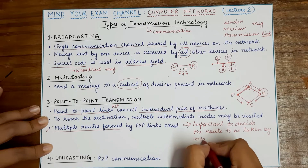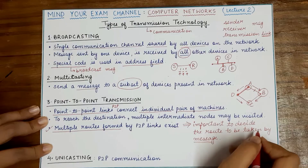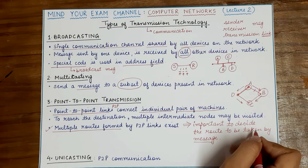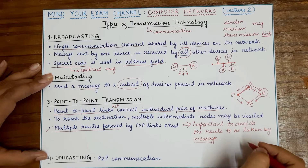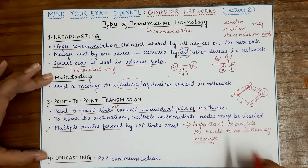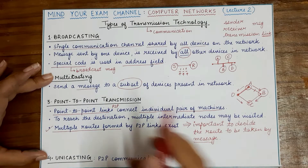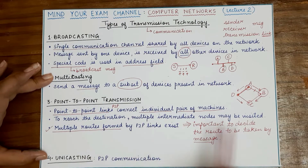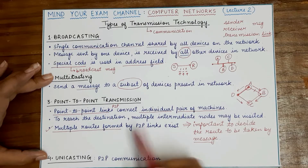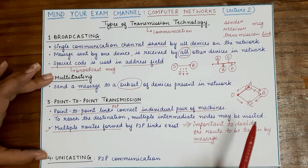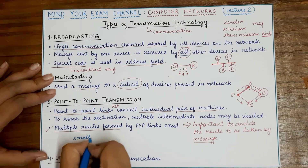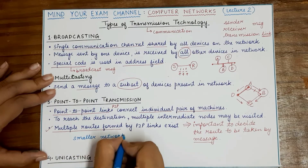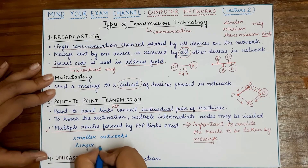The information or data being sent is referred to as a message. In computing language, we refer to it as a packet — a short message that gets transferred from one machine to another. We'll understand the difference between packets, frames, segments, and messages in future lectures. Another important point is that smaller networks generally make use of broadcasting, whereas larger networks generally make use of point-to-point transmission.